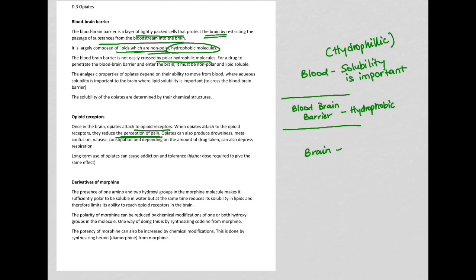The opiates can also produce drowsiness, confusion, nausea, constipation. And depending on the amount of the drug taken, it can also depress respiration. So these drugs are depressors. They are relaxers. If you take too much of it, it depresses or relaxes the body too much. That can stop respiration. Long-term use of opiates can cause addiction and tolerance.